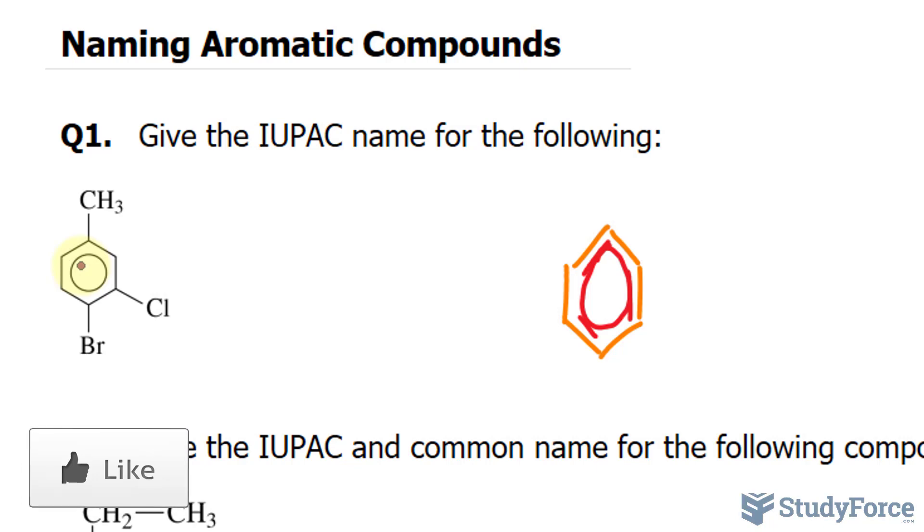And when it comes to naming compounds with substituents that contain bromine and chlorine, you start from alphabetical order. So we should write down bromine first and then chlorine and then everything else should follow. So putting all those ideas together, what should the name be?